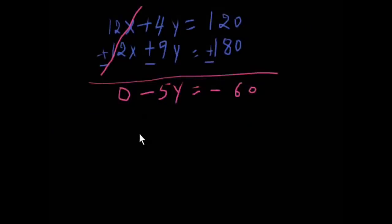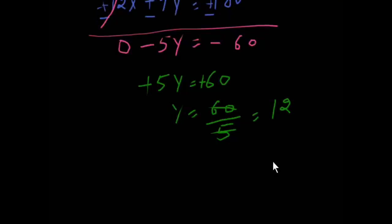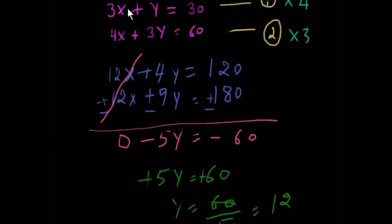This will be minus 5y equals minus 60. Minus minus, minus will be cut, and y will be 60 divided by 5. And we will cut this, 5 into 12. Y is 12.